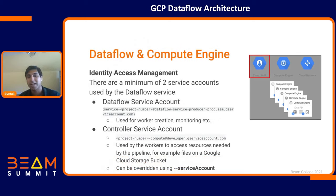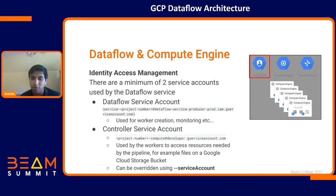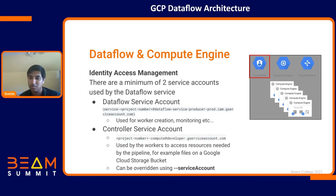Now I want to talk about identity and access management. With the Dataflow runner, there are two service accounts mandatory to run a Beam job. The first is the Dataflow service account, which corresponds to our primary worker and is used for creating workers and monitoring. The second is the controller service account, which is used for secondary workers and gives them appropriate permissions — such as accessing files on a Google Cloud Storage bucket — to actually execute the job.